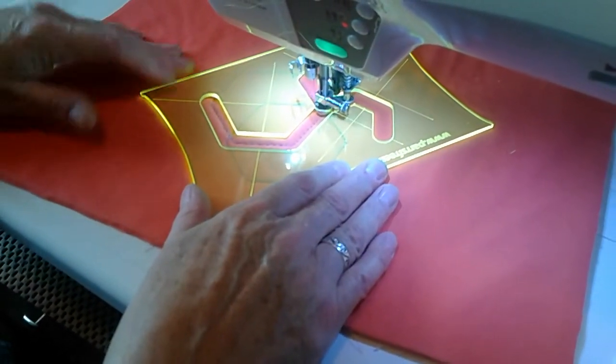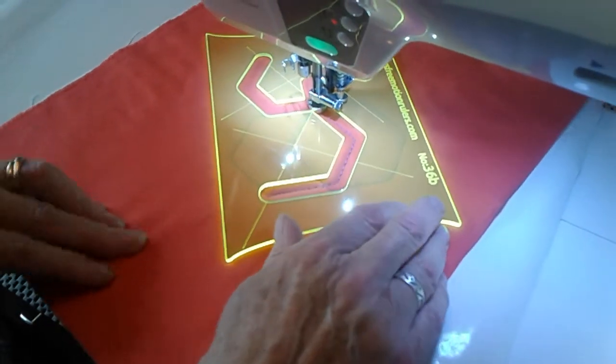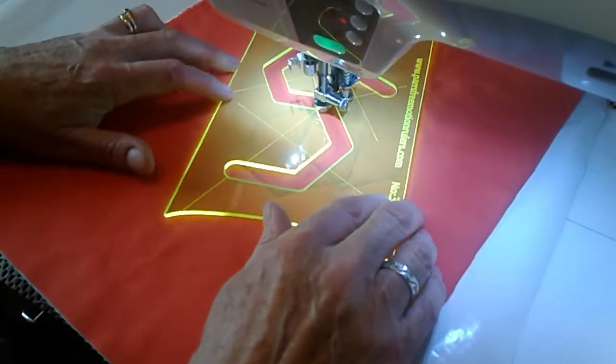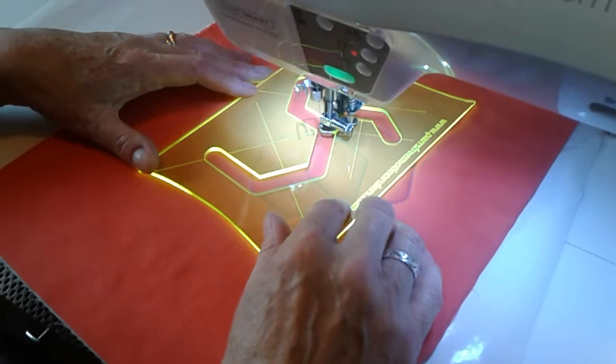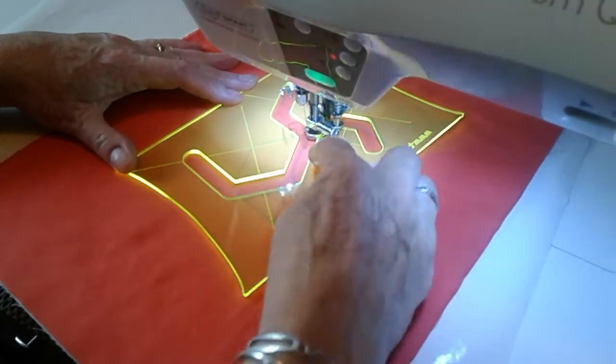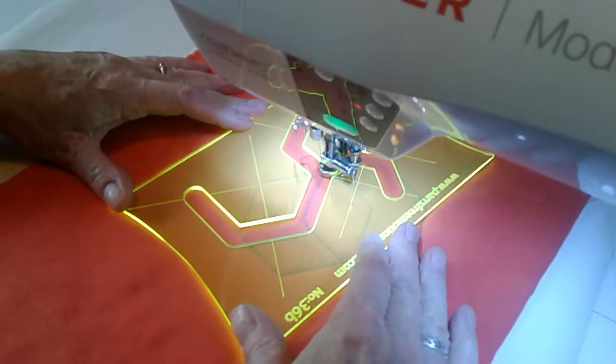Now I'm going to put the fabric back where we started from. I don't want to confuse you too much with turning the fabric. Turn, put the cross hairs on, and we're going to overstitch that line there.